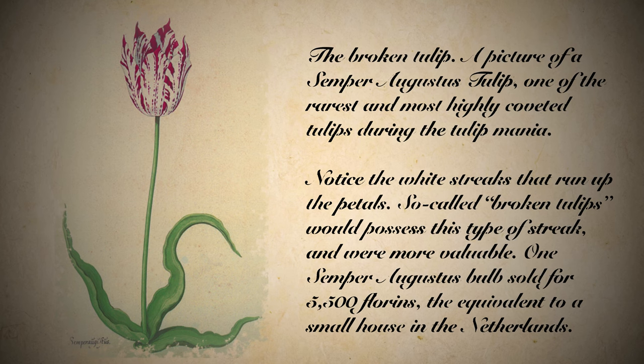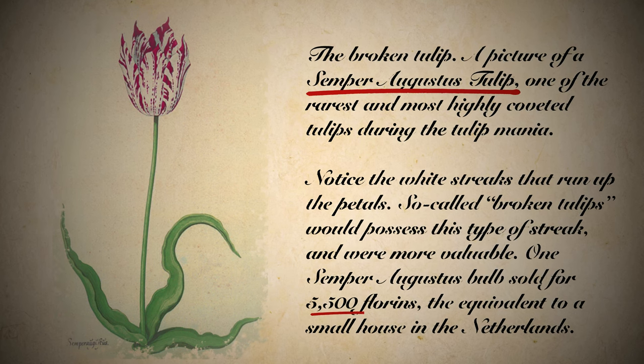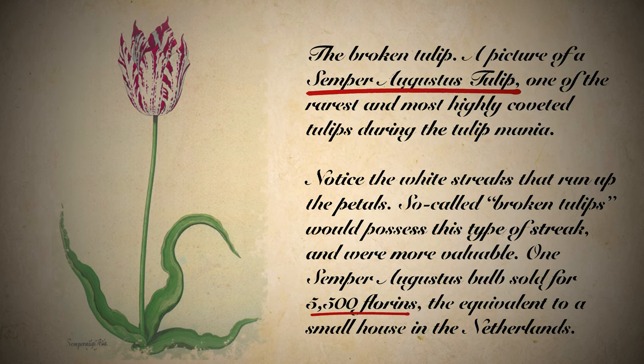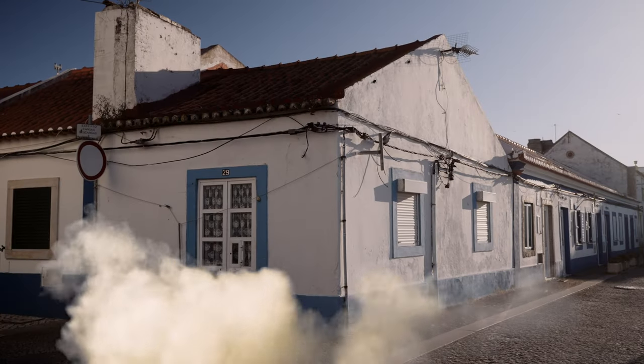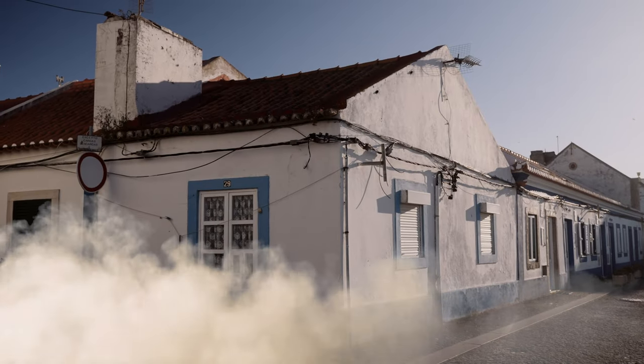In the first few weeks of 1637, a few tulip bulbs got really expensive. One particular variety called the Semper Augustus sold for 5,500 florins. At the time, that equated to a small house in the Netherlands. The merchant class would buy bulbs with the sole purpose of reselling them at a high price, a classic signal of speculation.